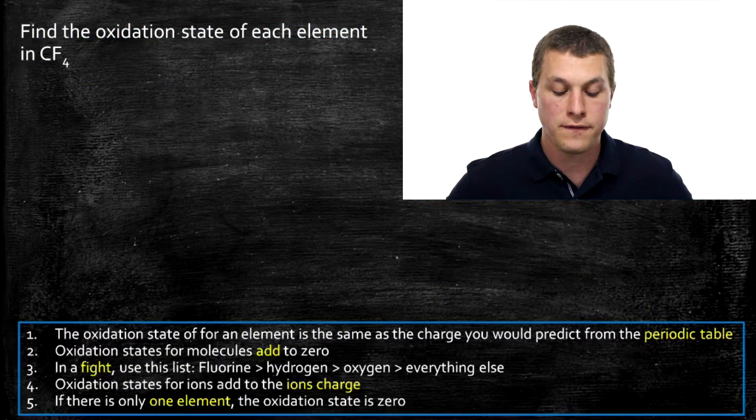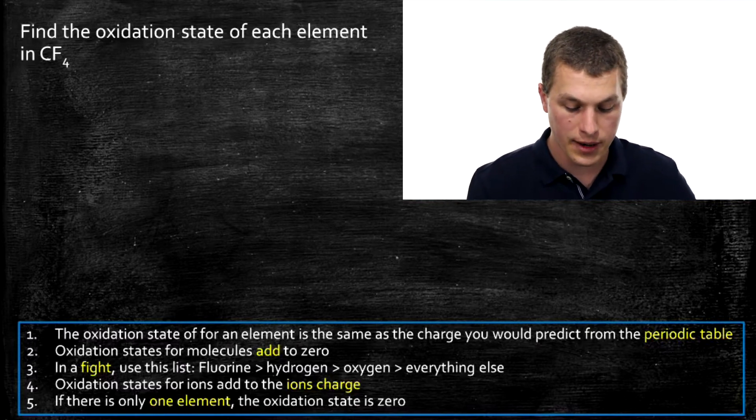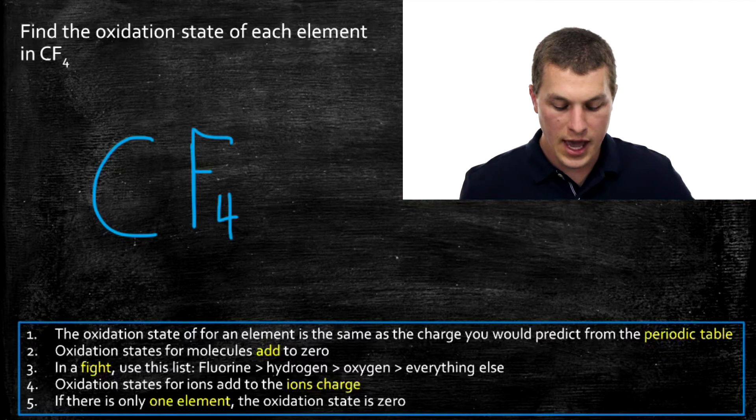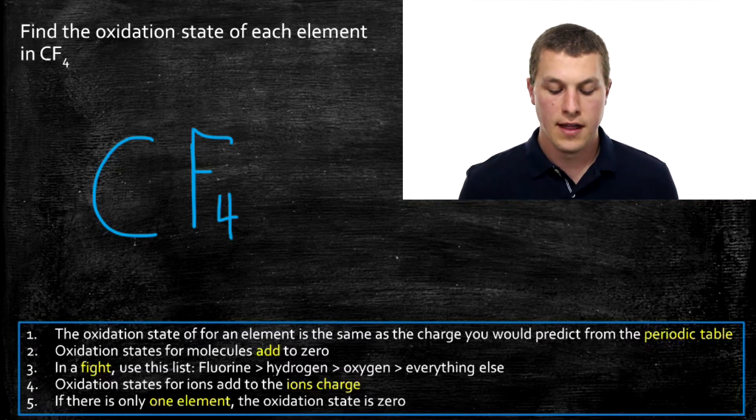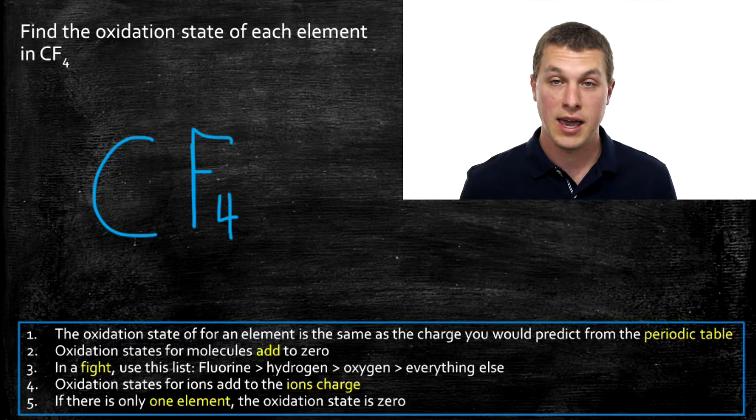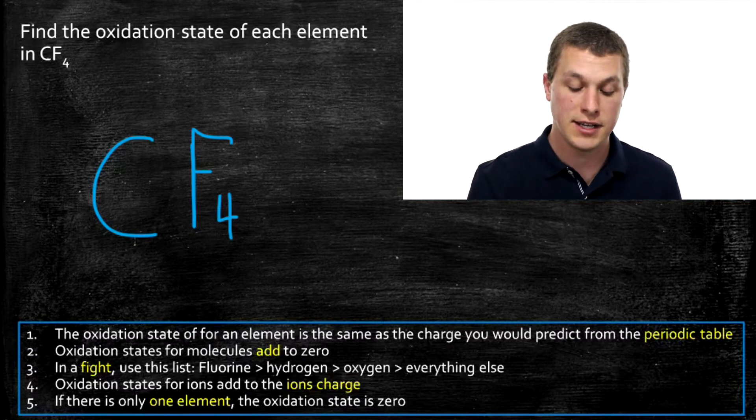Here in this problem we want to find the oxidation state of each element in CF4. CF4 has two elements in it, carbon and fluorine. Rule one says that the oxidation state for an element is the same as the charge you would predict from the periodic table. I can't predict the charge of carbon from the periodic table, but I can predict the charge of fluorine. The charge of fluorine would be negative one, and that means the oxidation state of fluorine is negative one.